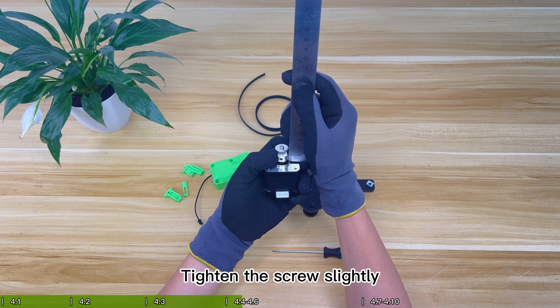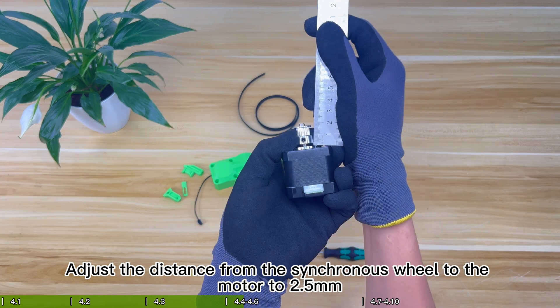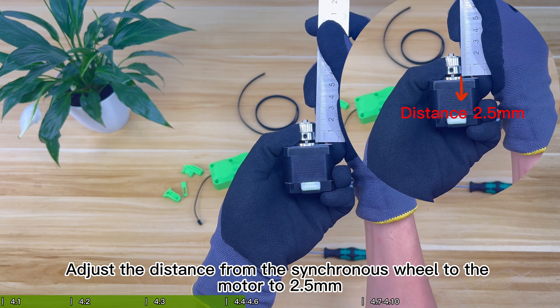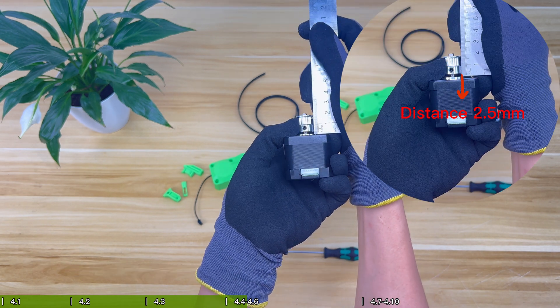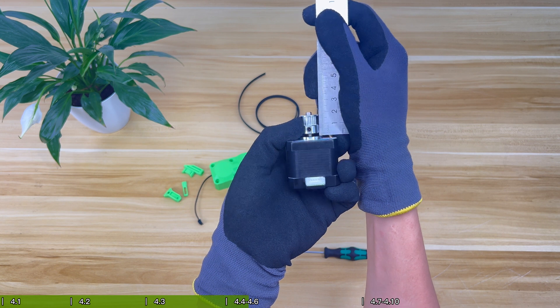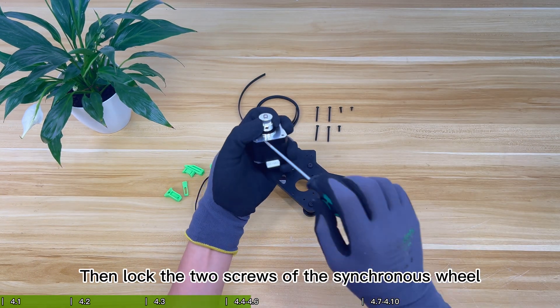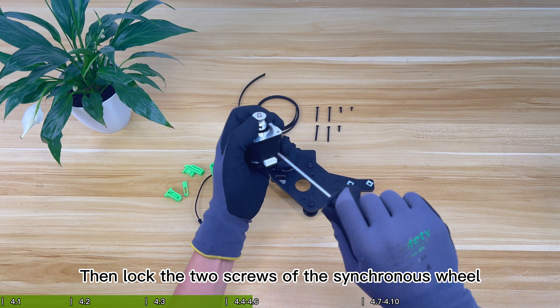Tighten the screws slightly. Adjust the distance from the synchronous wheel to the motor to 2.5 millimeters. Then lock the two screws of the synchronous wheel.